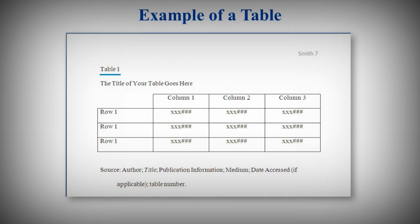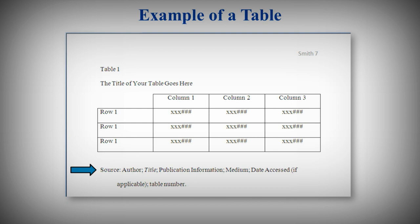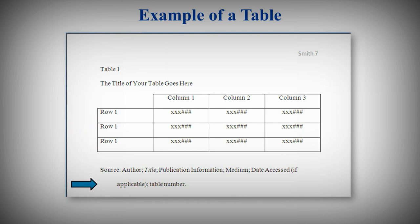MLA advises you to place any tables or figures as close as possible to the part of your text that they relate to. Don't simply place all tables or figures at the end of your paper. Tables should be numbered, and directly below that, give the table a title. Underneath your table, write 'source' and give the citation information required for that type of source — whether it's a book, an article, or a website will determine what information is required. It's not formatted exactly the same as an entry in your works cited list; notice each bit of information is separated by a semicolon. And just like the rest of your paper, this should all be double-spaced and in 12-point Times New Roman font.